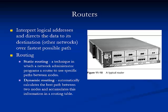Routers operate at Layer 3, or the network layer of the OSI model. Their main function is to interpret logical addresses and, based on that information, direct the data to a destination or other networks over the fastest path possible. In dynamic routing, the router automatically calculates the best path between two nodes and accumulates this information in a routing table. In static routing, at least some of the path is manually coded into the router's configuration.